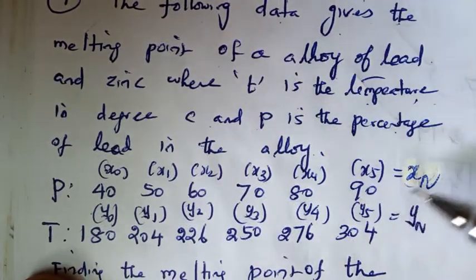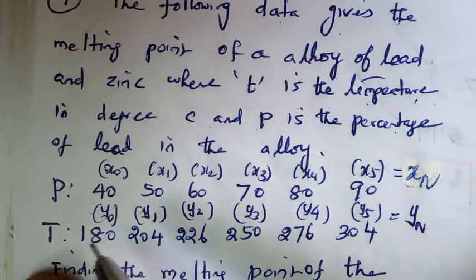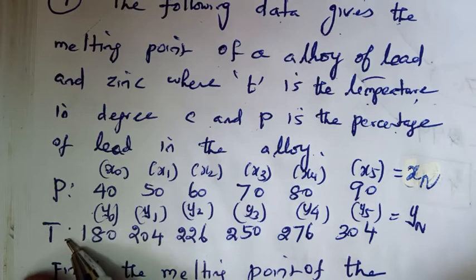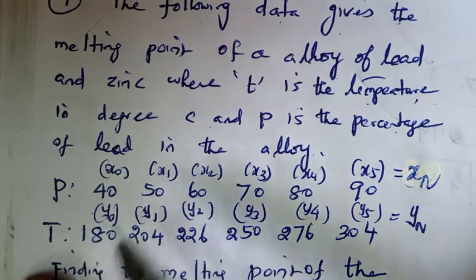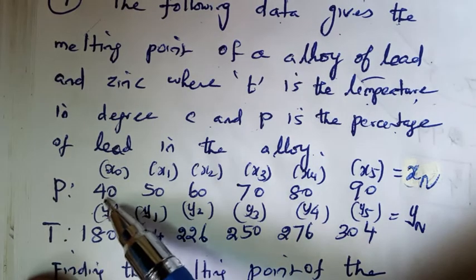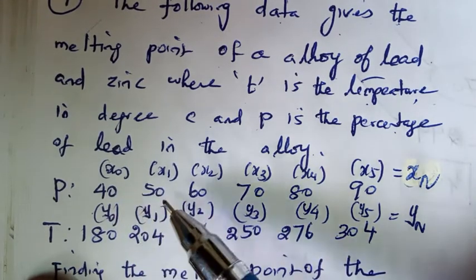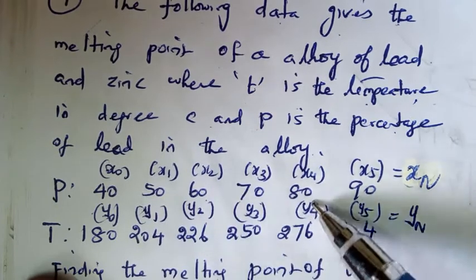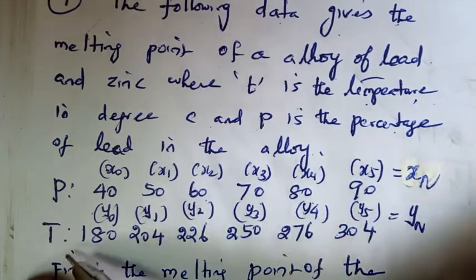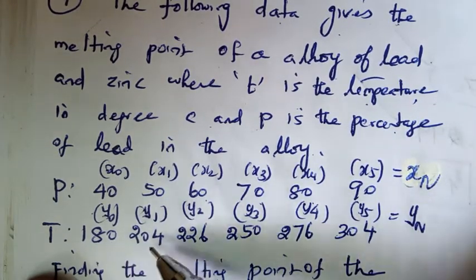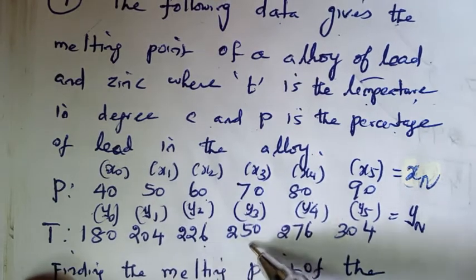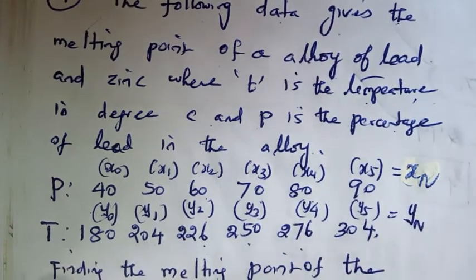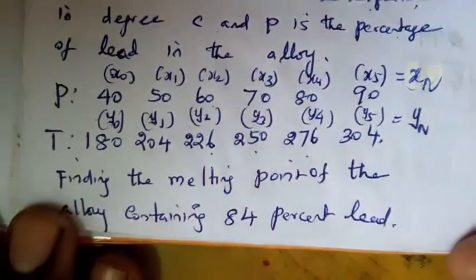Two pieces of information are given. The percentage values are: 40, 50, 60, 70, 80, 90. The corresponding temperature values are: 180, 204, 226, 250, 276, 304.